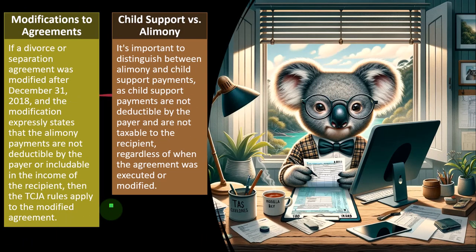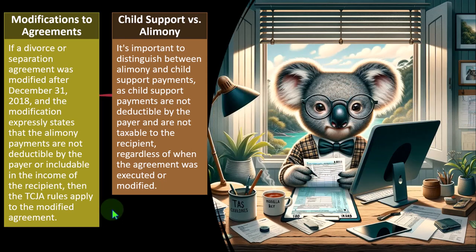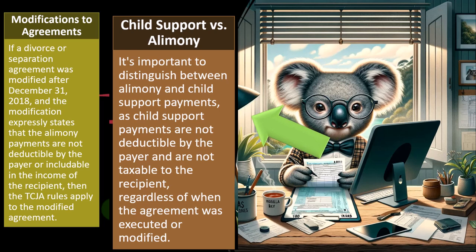The change would be that the new rules are beneficial to the recipient who doesn't have to include the money in income, and detrimental to the one that is paying. So if you modify the agreement, you would take that into consideration and come up with an agreement based on the new landscape. Child support versus alimony: it's important to distinguish between alimony and child support payments, as child support payments are not deductible by the payer and are not taxable to the recipient, regardless of when the agreement was executed or modified.